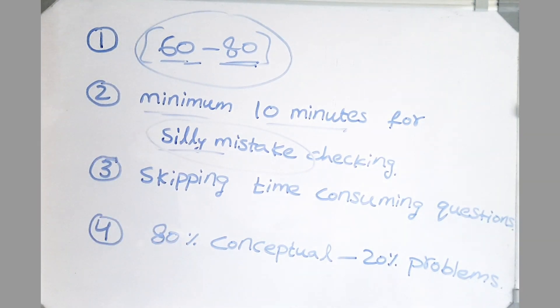And third point is very important, friends. Skipping the time consuming questions. 5 to 10 questions will be like this which consume a lot of time, so you should be able to skip that. And always remember 80% are conceptual questions which will be very easy and very tricky as well. So this is the region where you could be committing a lot of silly mistakes.